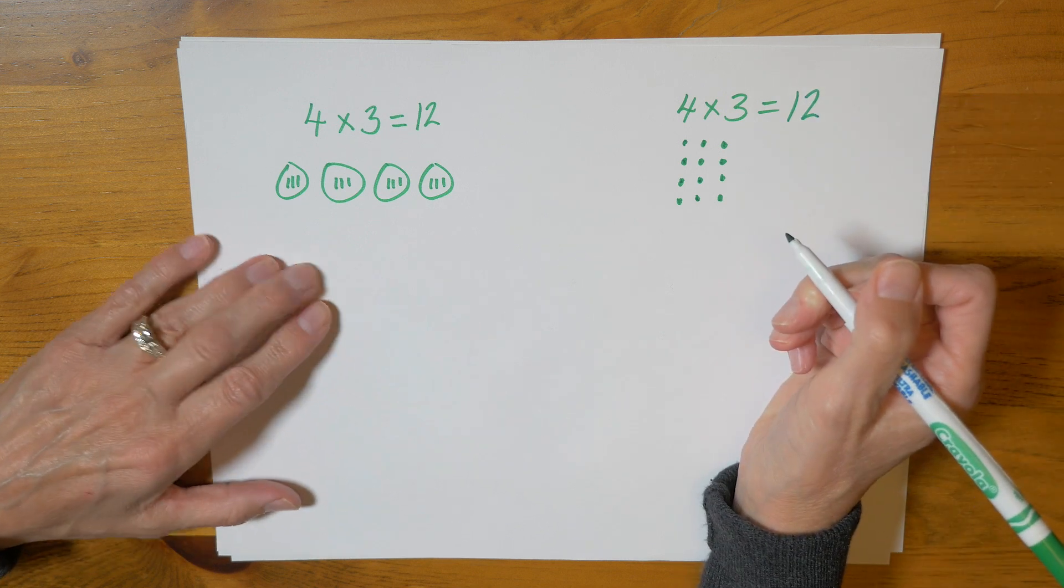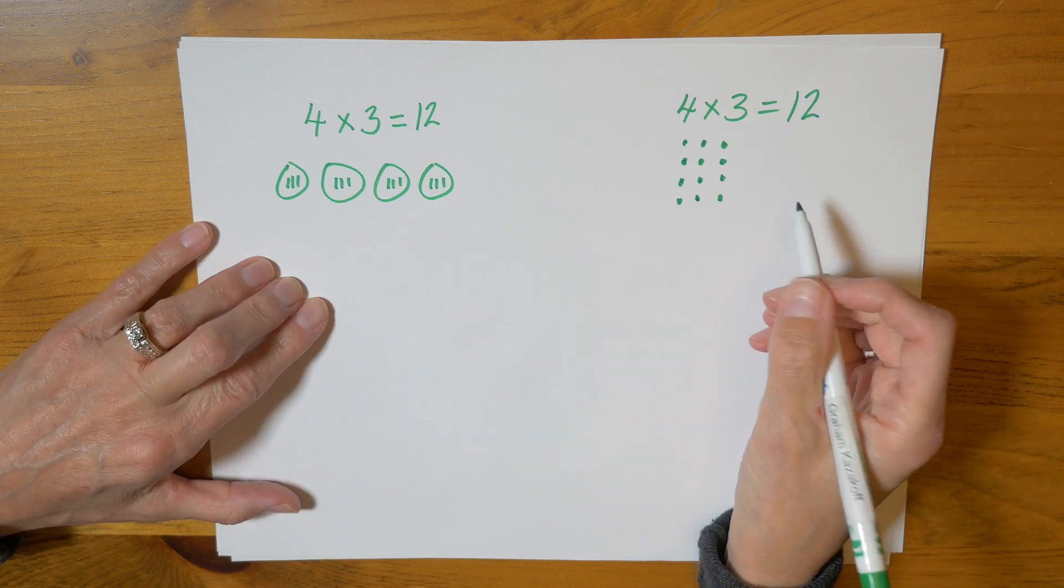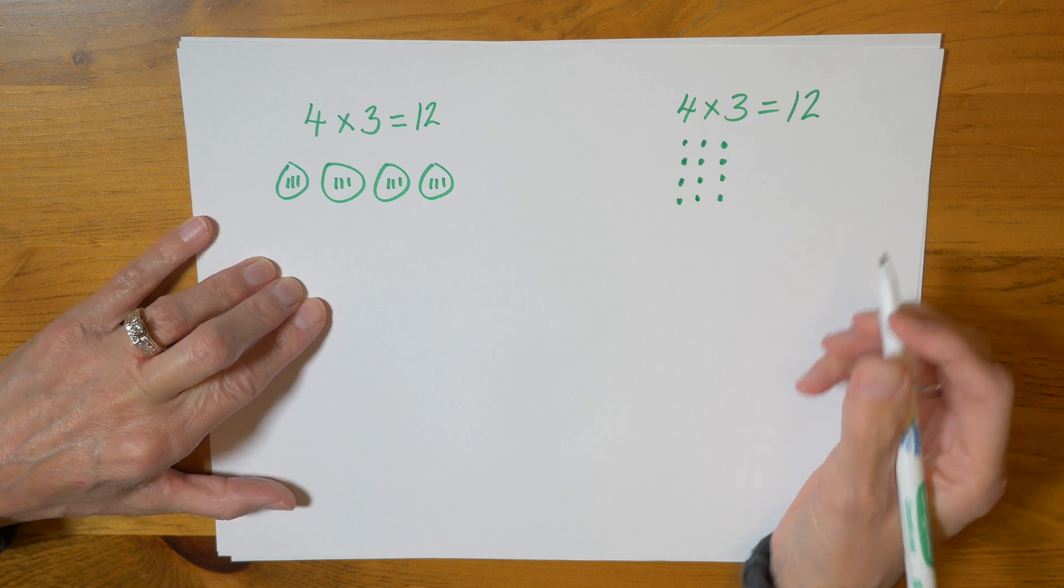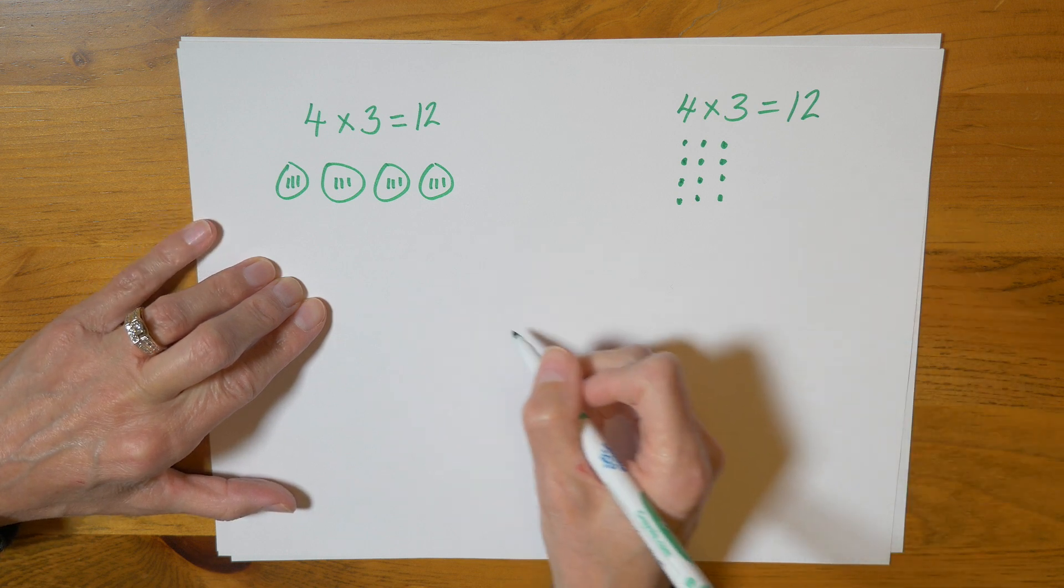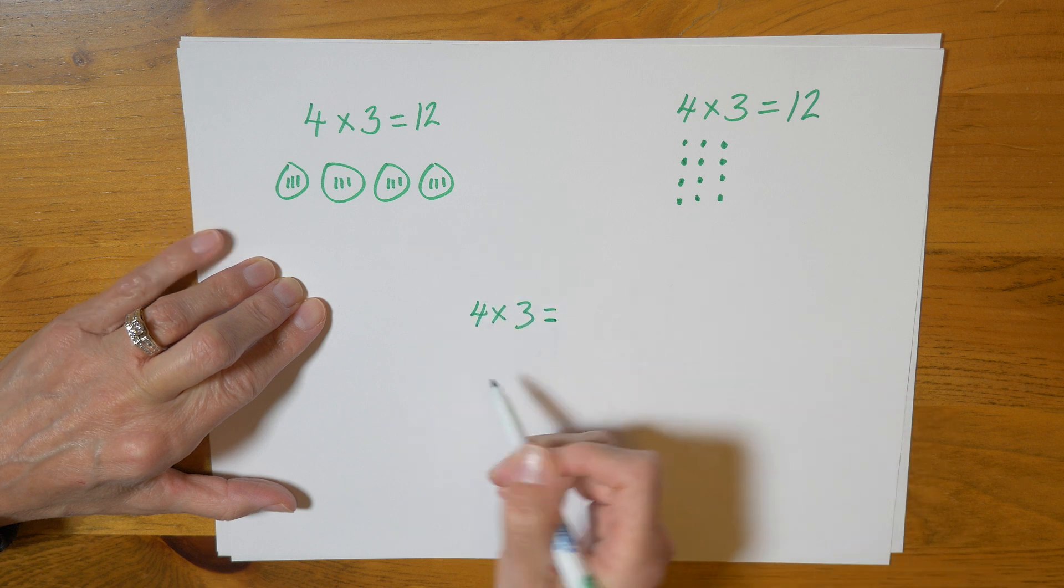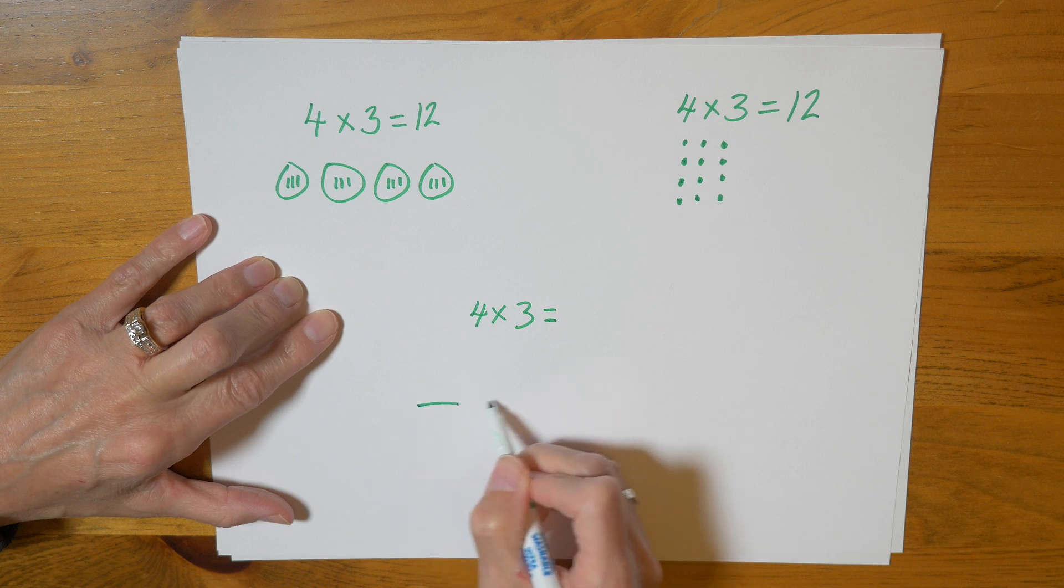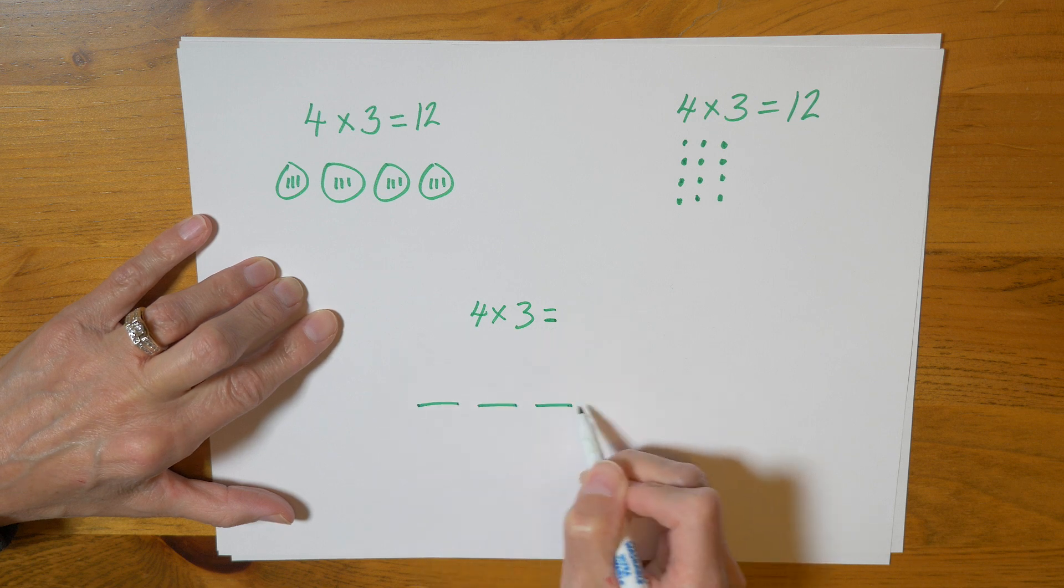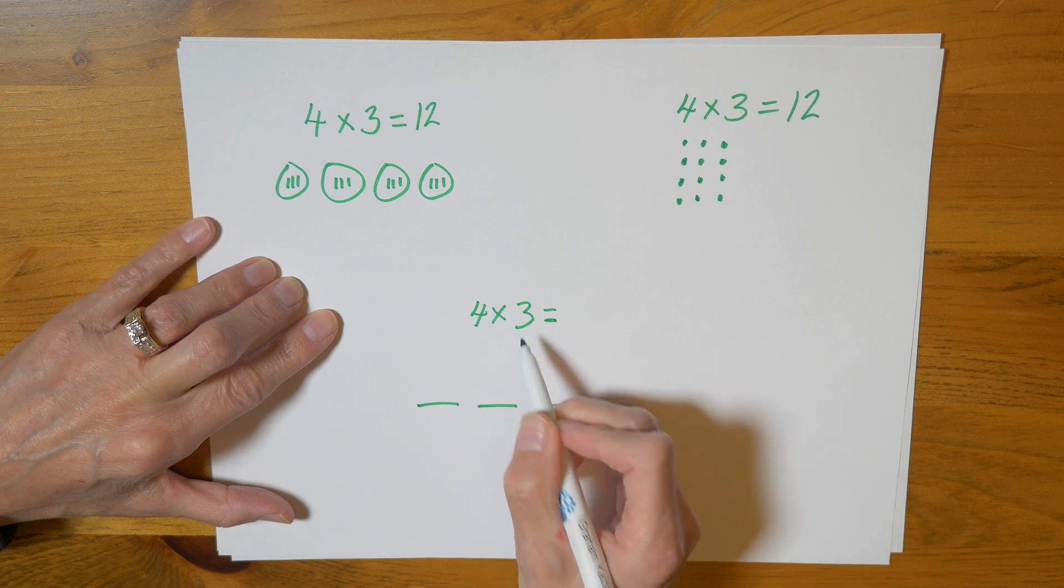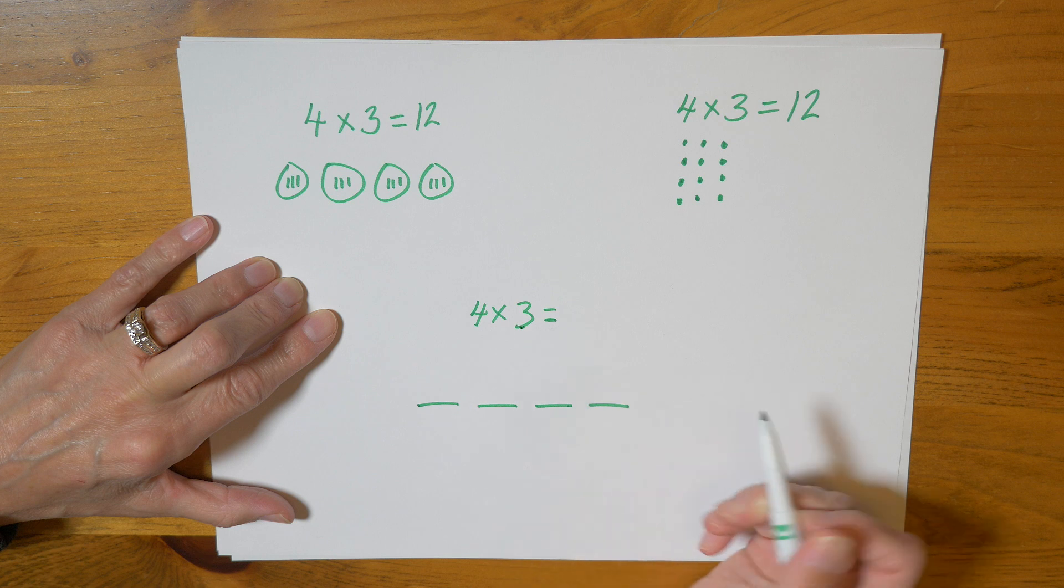There is one more way to solve a multiplication question and that is by skip counting. So if we have four times three as our question and we want to use skip counting to solve the answer, we're going to give ourselves four spaces because we have four. And then we're going to skip count by threes. That number there tells us what we're going to skip count by.